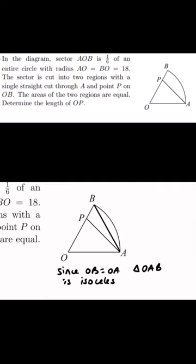However, since angle O is 60 degrees, this means that the other equal angles are also 60, thus the triangle is equilateral.